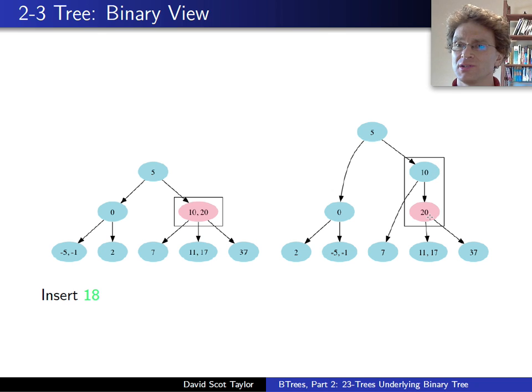But of course, we can imagine that that 2-3 node, that node with two keys, is sort of implemented by two little binary nodes, right? Hey, if you're smaller than the 10, go to the left child. If you're smaller than the 20 but bigger than the 10, go to the 20. And if you're smaller than 20, go to the middle child. If you're bigger than 20, go to the right child.